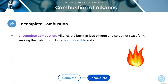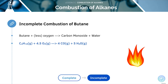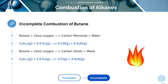During incomplete combustion, alkanes are burnt in less oxygen. This means they don't react fully, making toxic products such as carbon monoxide and soot. Even if we burn the same butane in less oxygen, we will still produce carbon monoxide and water. If we use even less oxygen again, we'll produce soot and water.